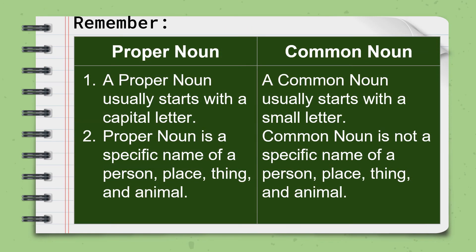Remember: a proper noun usually starts with a capital letter. A proper noun is a specific name of a person, place, thing, and animal. A common noun usually starts with a small letter. A common noun is not a specific name of a person, place, thing, and animal.